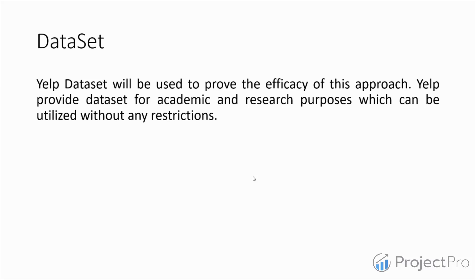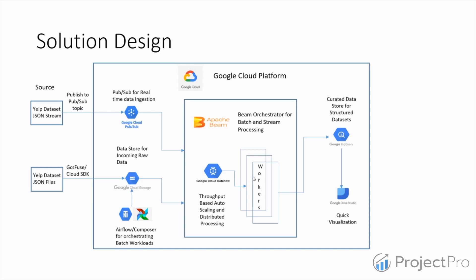Now let's look at the solution design for both batch and streaming loads. On the left, we have the Yelp dataset JSON stream — we'll push data from a file to a PubSub topic. Our Dataflow job will read messages from Cloud PubSub, process them, and store them in BigQuery. On the top of the diagram: Yelp dataset JSON stream pushes to the PubSub topic, our Dataflow job subscribes to that topic, and based on data volume, workers auto-scale before storing data into BigQuery.